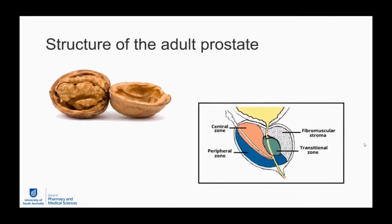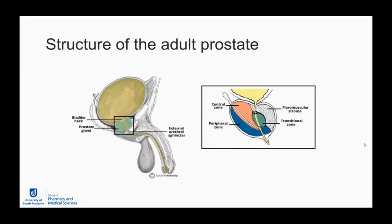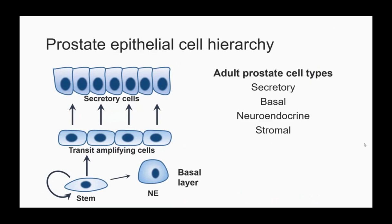The prostate is a walnut-sized gland with an outer shell or capsule, within which we find fibromuscular stroma and the transitional, central, and peripheral zones. It's situated beneath the bladder, through which the urethra passes. As we know, a benign or malignant growth of the prostate can impact urethral and bladder control quite significantly. The secretory epithelial cells arise from stem cells that differentiate into transit-amplifying cells, and prostate cancer pathogenesis primarily initiates from these secretory epithelial cells.